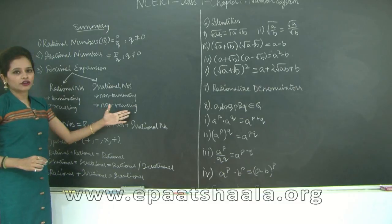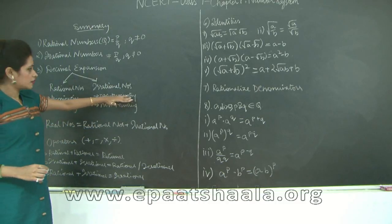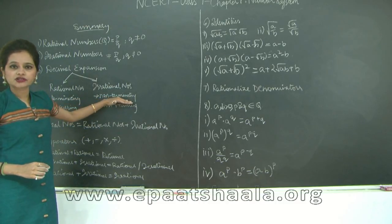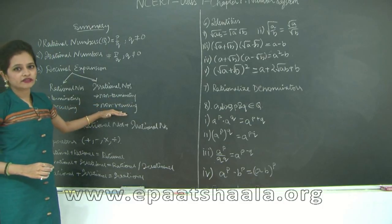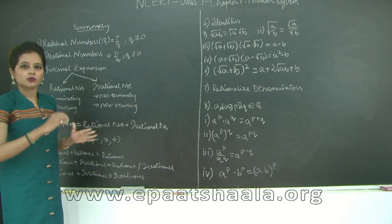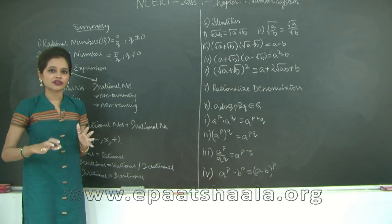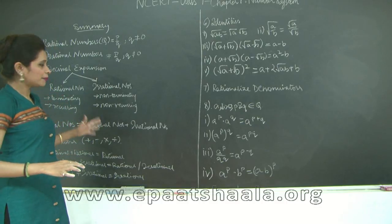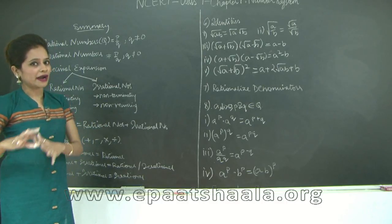For non-terminating, non-recurring — in irrational numbers — the decimal expansion will never terminate and it will never be recurring. You will have a series of numbers after the decimal point in the quotient, but none of them will follow a particular pattern.